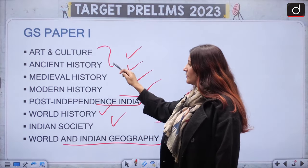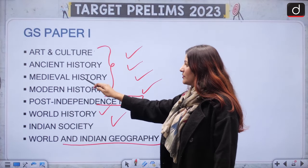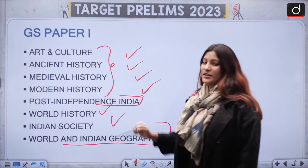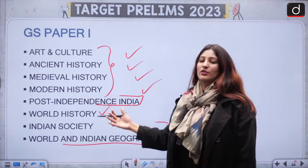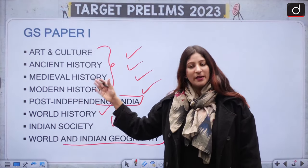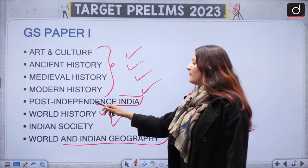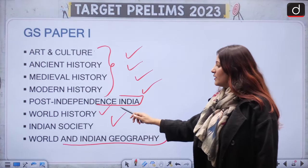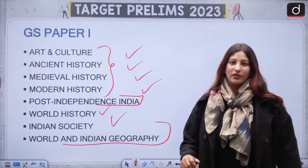In this episode we will cover Art and Culture, Ancient History, Medieval History, and Modern History syllabus. The next episode, which is a continuation of this one, will cover Post Independence India, World History, Indian Society, and Indian Geography.